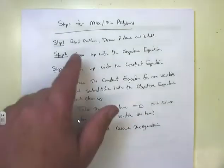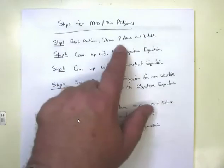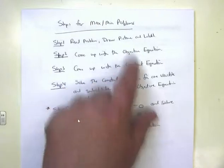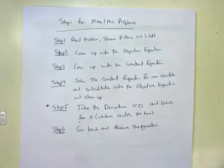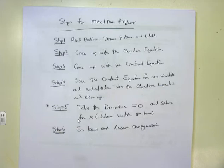Step one: read the problem, draw a picture, and label it. Step two: come up with the objective equation. Remember, in calculus, your objective is what you want to maximize or minimize — that's your objective equation.